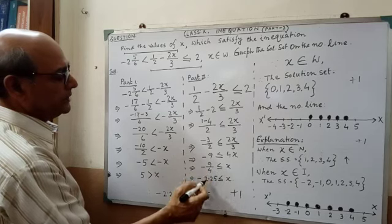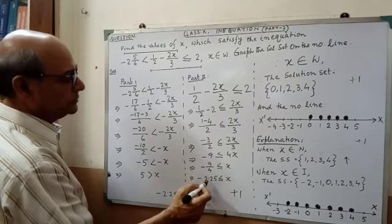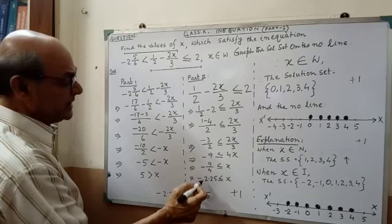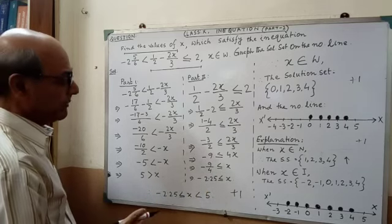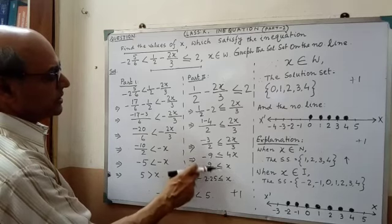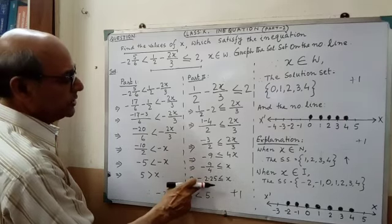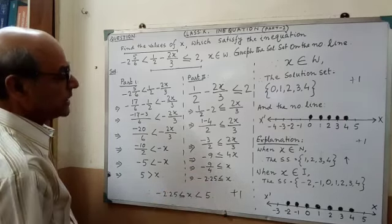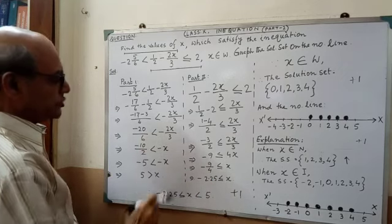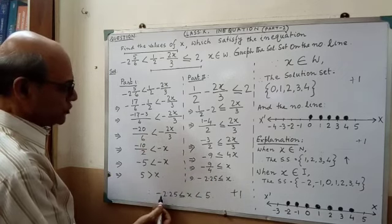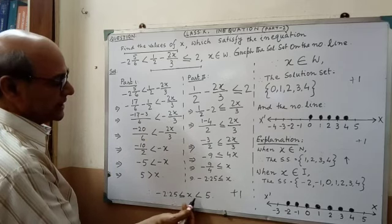Any fractional part, if you convert into decimal form, then it will be easier for plotting on the number line. This is why my suggestion is to convert the fractional part into decimal form. After that, by combining these two, we are getting minus 2.25 less than equal to x less than 5.